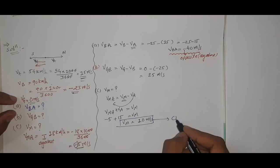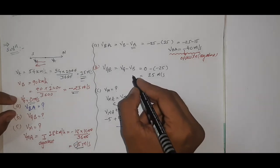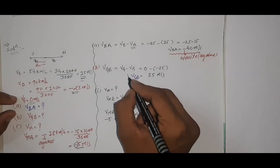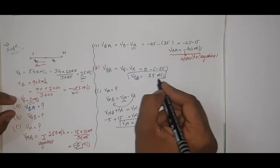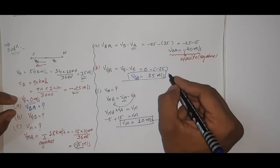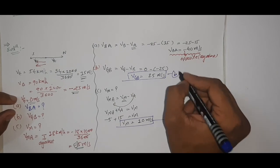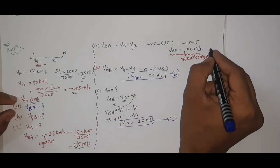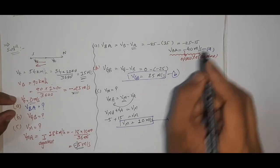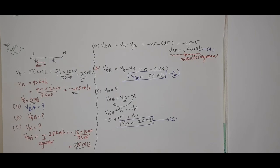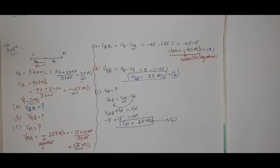So the answers are: (a) velocity of B with respect to A = −40 m/s, (b) velocity of ground with respect to B = +25 m/s, and (c) velocity of monkey = 10 m/s. This example is related to relative velocity. Thank you, take care.